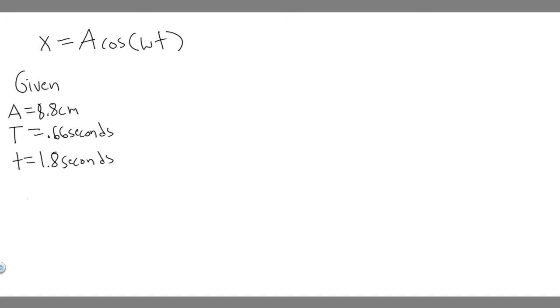So omega in this case, for these problems, is equal to 2 pi over T. And so T in this case is the time period, and we do have this given. So you can just say this is x equals A times the cosine of 2 pi times the time over the time period. So this right here is going to be the equation, and we just have to plug in the variables we're given.